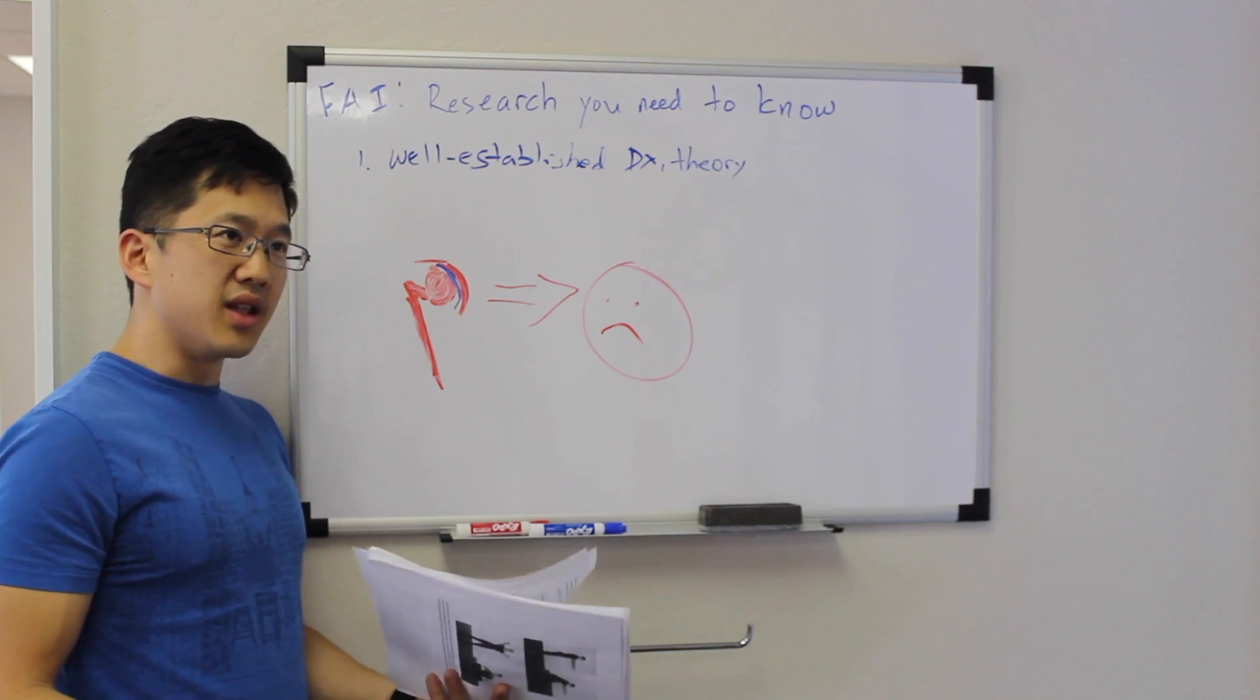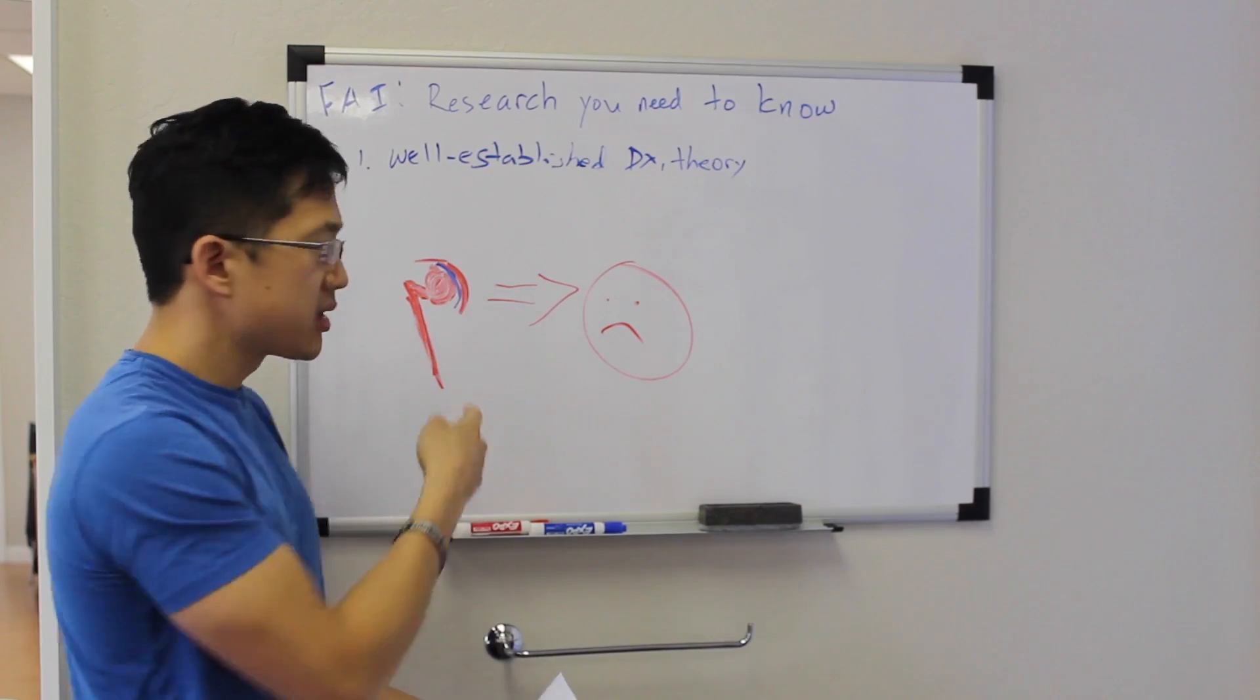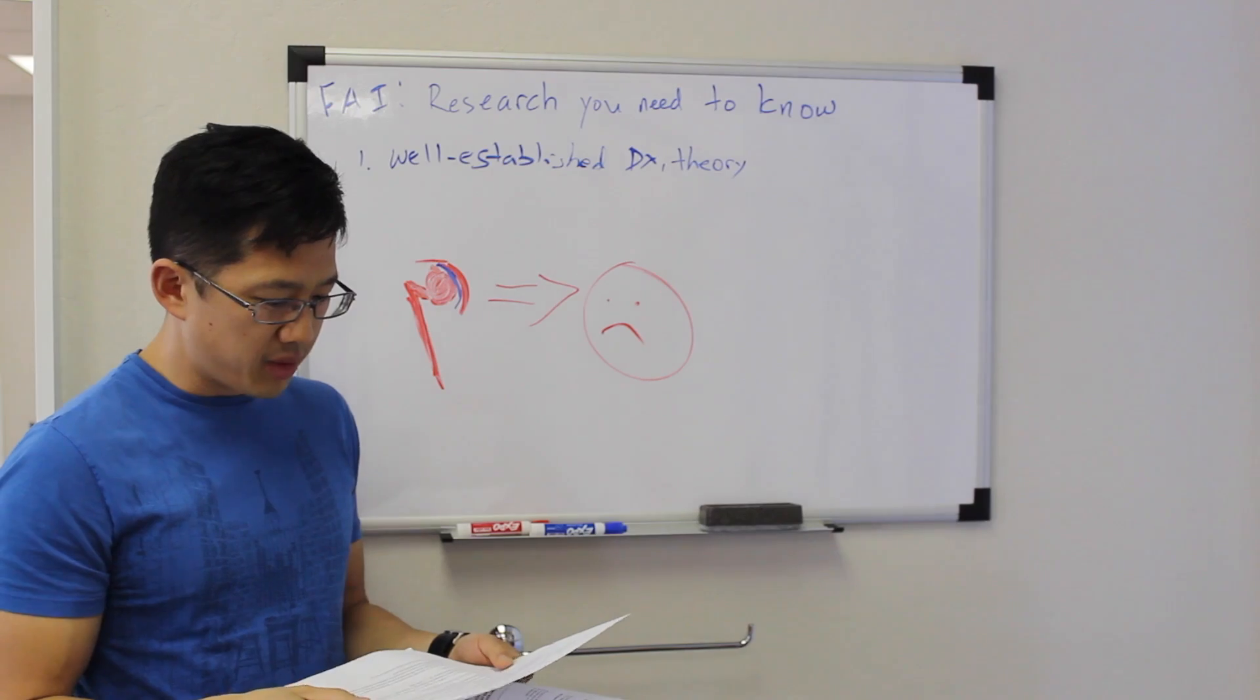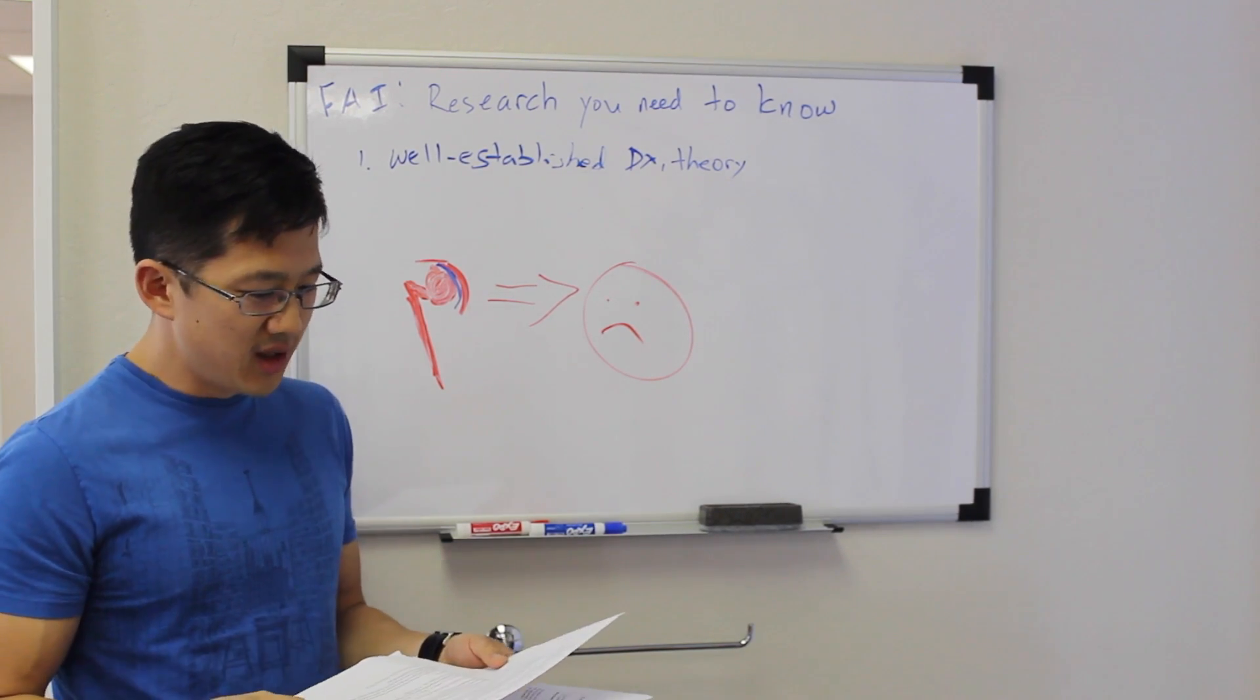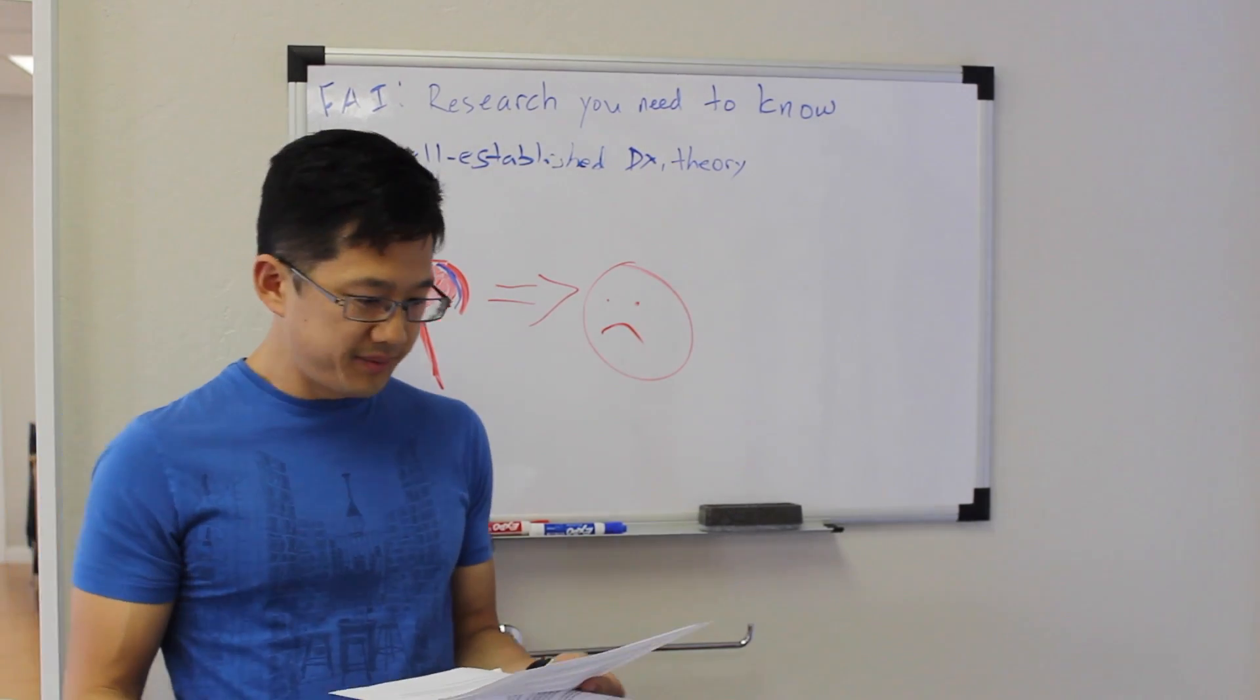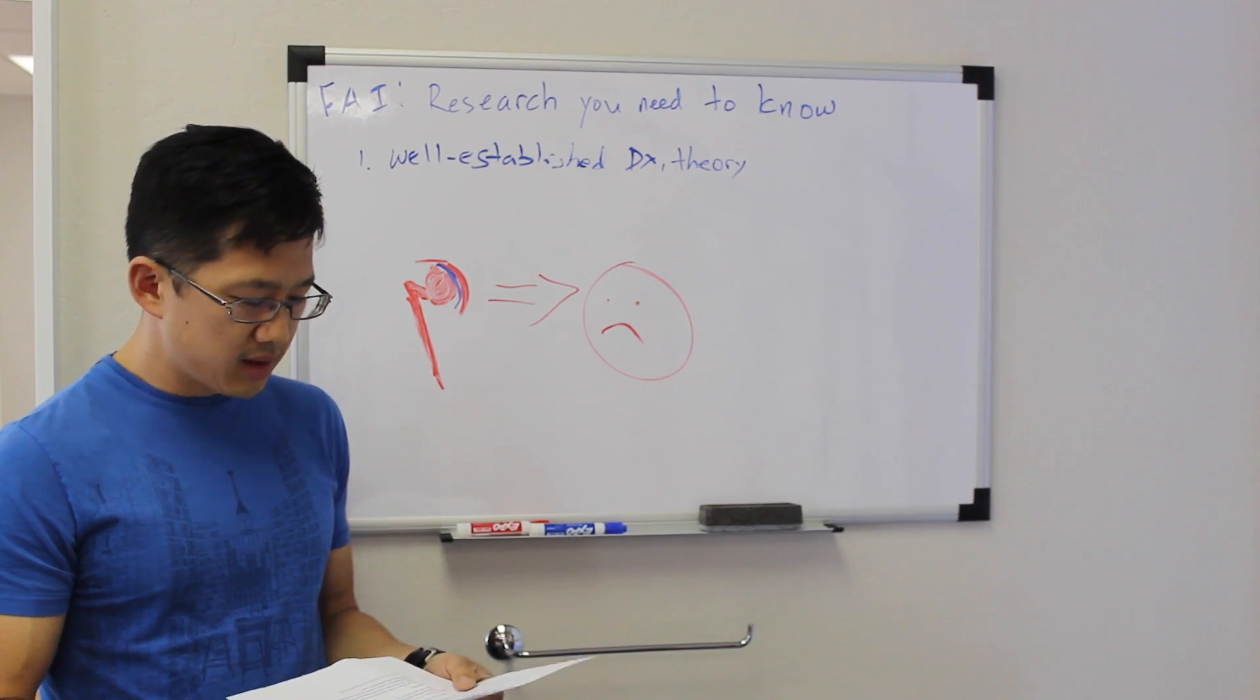Now we also need to think, what about hip range of motion? Is that an issue that this causes? So there was a study done in 2011 called the Prevalence of Radiological Signs of Femoral Acetabular Impingement in Patients Presenting with Longstanding Adductor-Related Groin Pain in the British Journal of Sports Medicine.